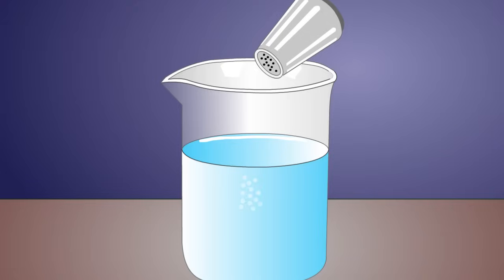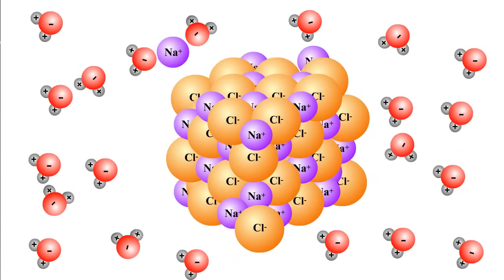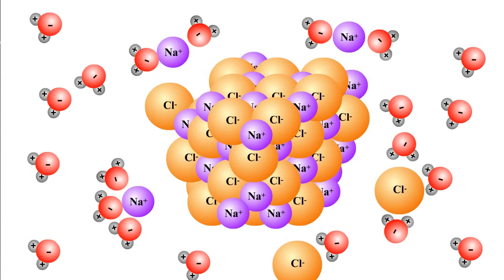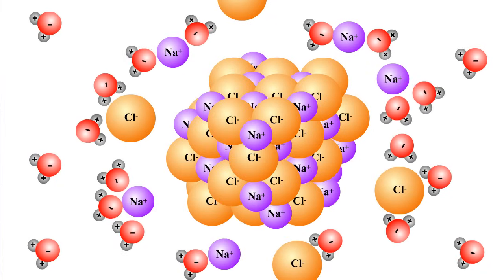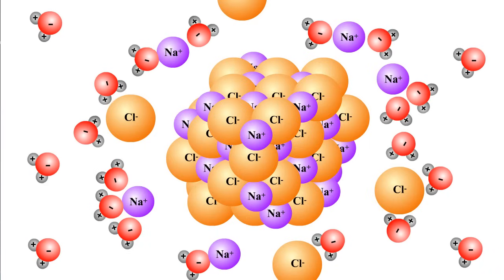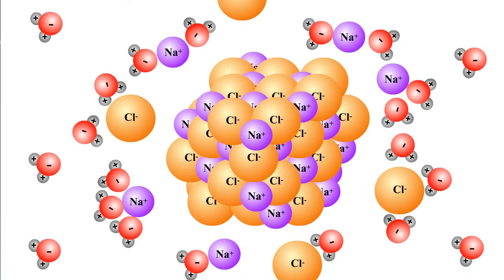When a salt, such as sodium chloride, is placed in water, the negative ends of the water molecules are attracted to the positively charged sodium ions, and the positive ends of the water molecules are attracted to the negatively charged chloride ions. This attraction causes the sodium and chloride ions to break up or dissociate in water.